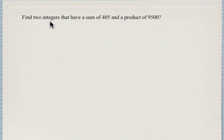Now here's a question that's sometimes straightforward, but in this case the number is a little bit more complex. We're asked to find two integers that have a sum of 405 and a product of 9,500.